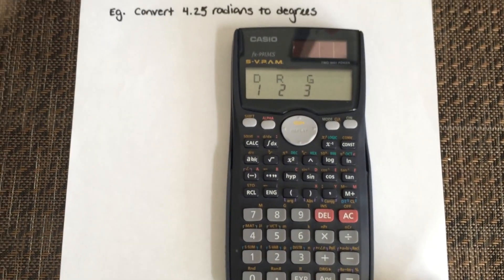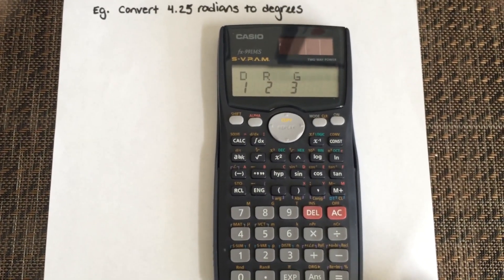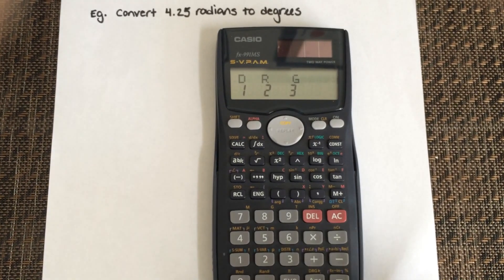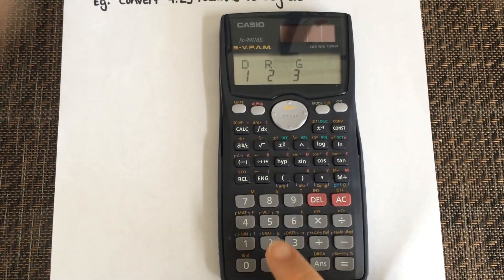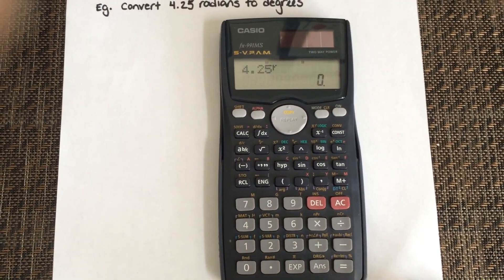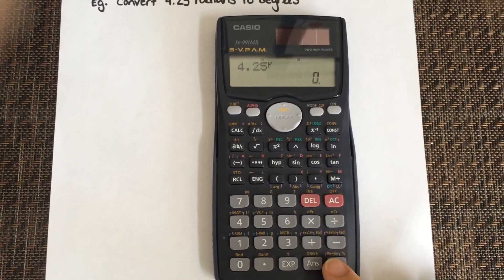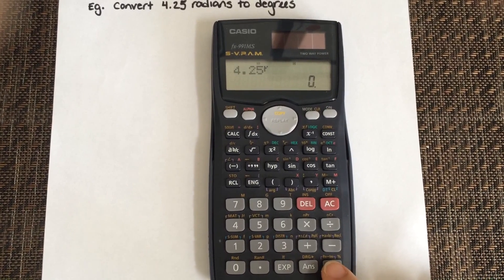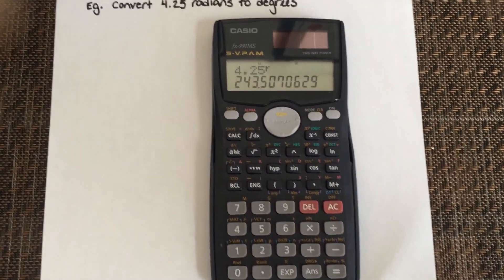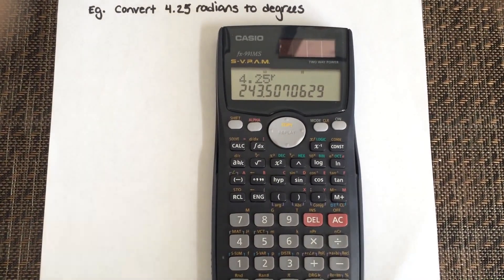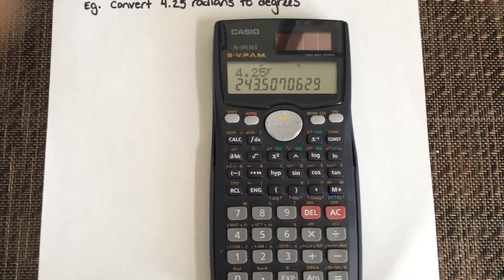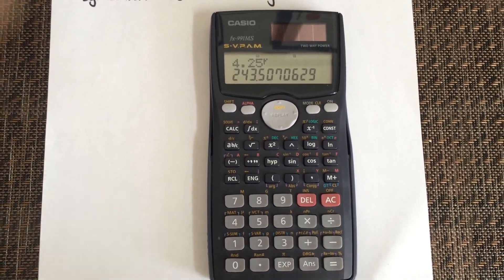It'll ask you which unit you're using. We're converting radians to degrees, so we want to select two for radians. It's going to say 4.25 rad. Once you hit your equals sign, since we're in degree mode it's going to give me my degrees. So 4.25 rad is 243.5070629 degrees.